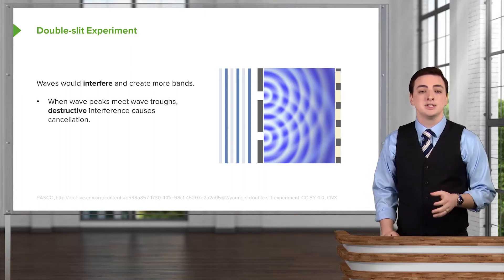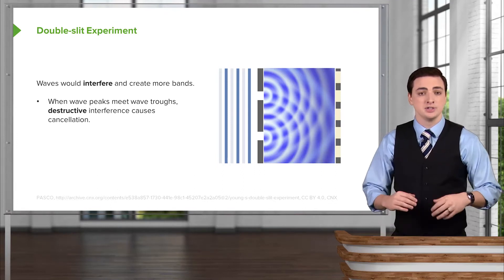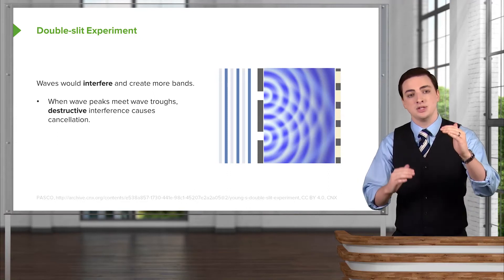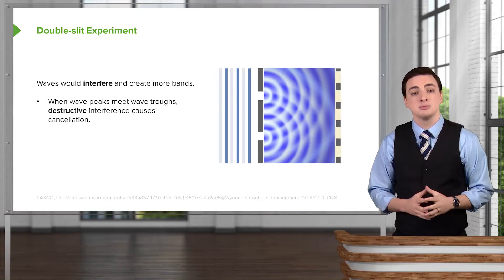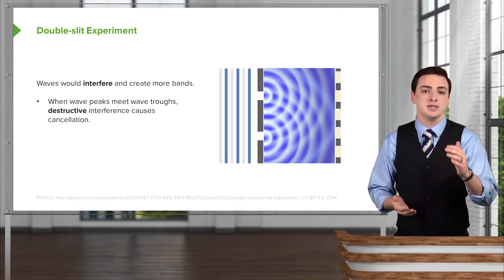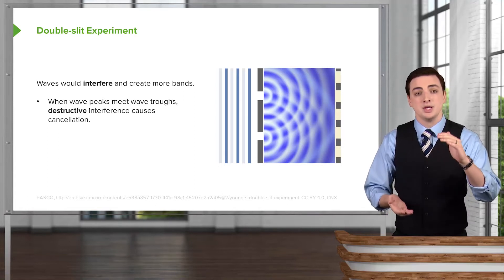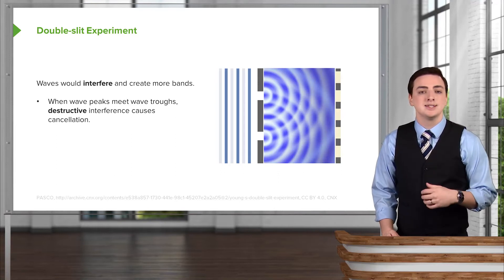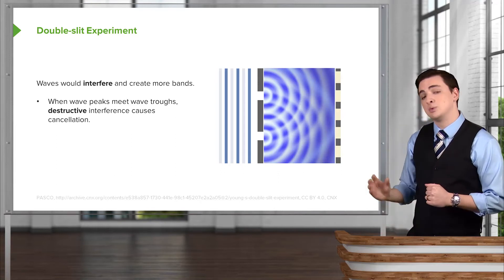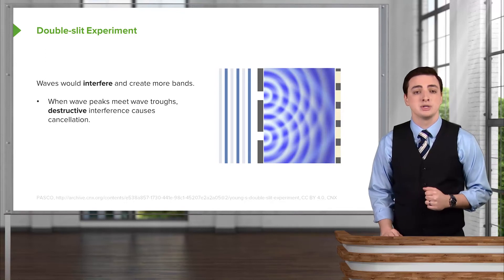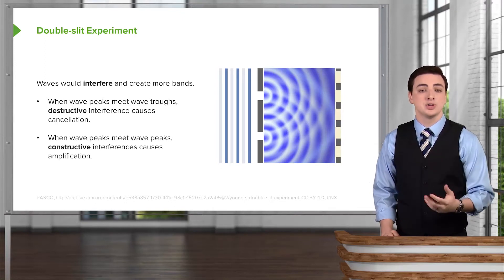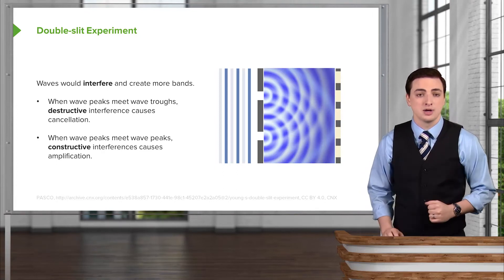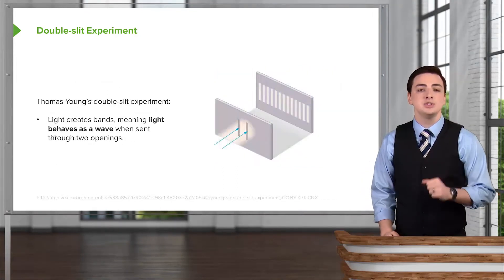On the other hand, if instead of constructively interfering with peaks of the light wave meeting peaks of the light wave, we could also have the peaks meeting the troughs. As we saw when we talked about wave addition, when these peaks and troughs meet with each other, they destructively interfere because you add a positive with a negative. In those cases, the light, when it's destructively interfered, would create these dark spots on the screen behind it. This is in contrast with the constructive interference, which comes when peaks meet peaks or troughs meet troughs.